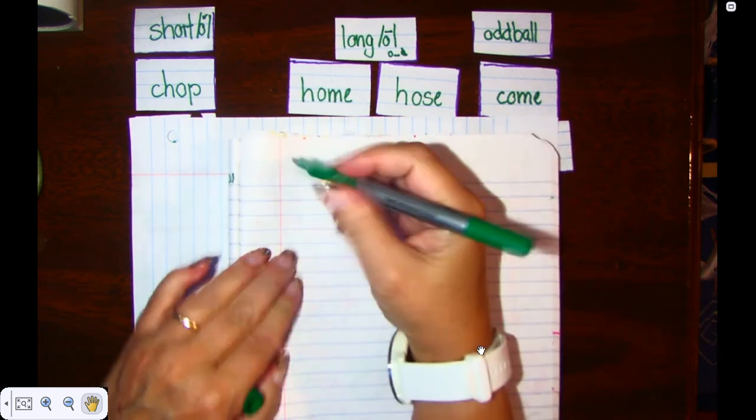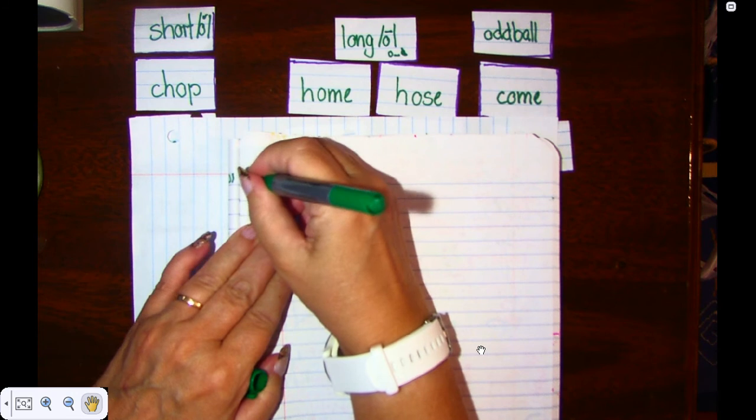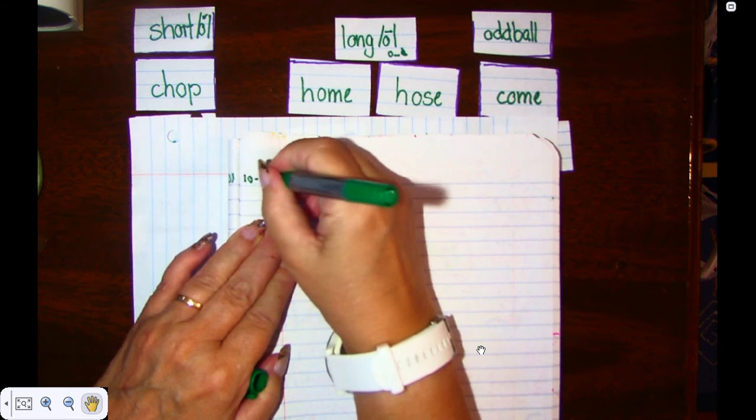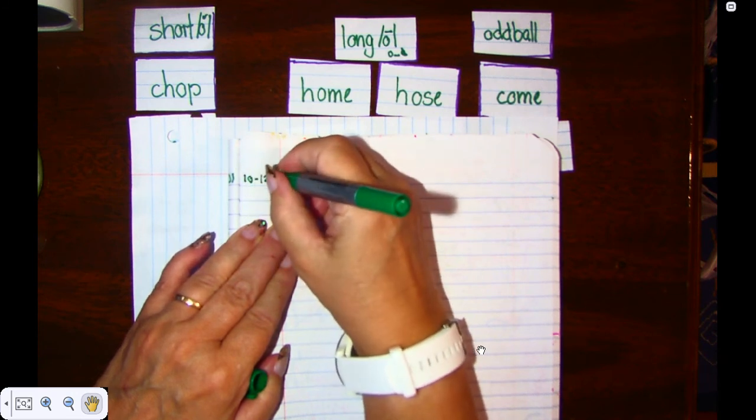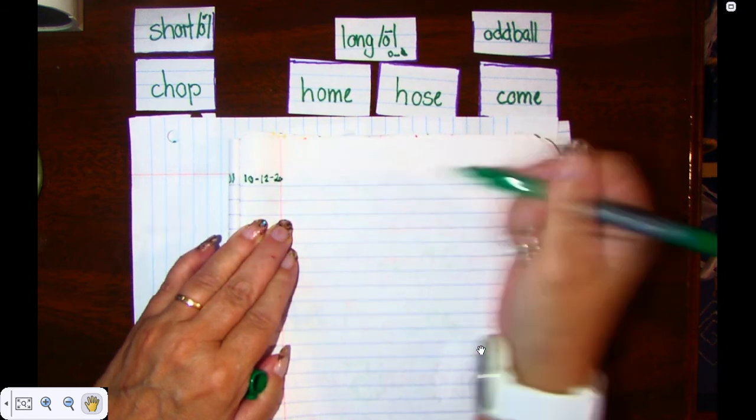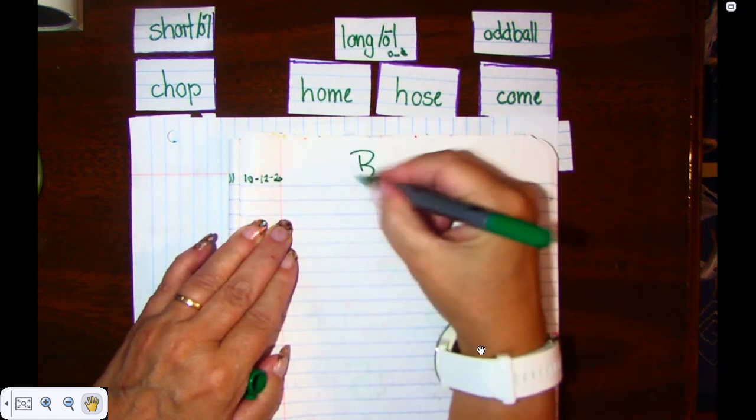And since you covered up your words, we're going to write down the date. Your date might be different than mine, so make sure you check with your computer or someone who loves you. Today is 10, 12, 20, and we're doing a blind sort.